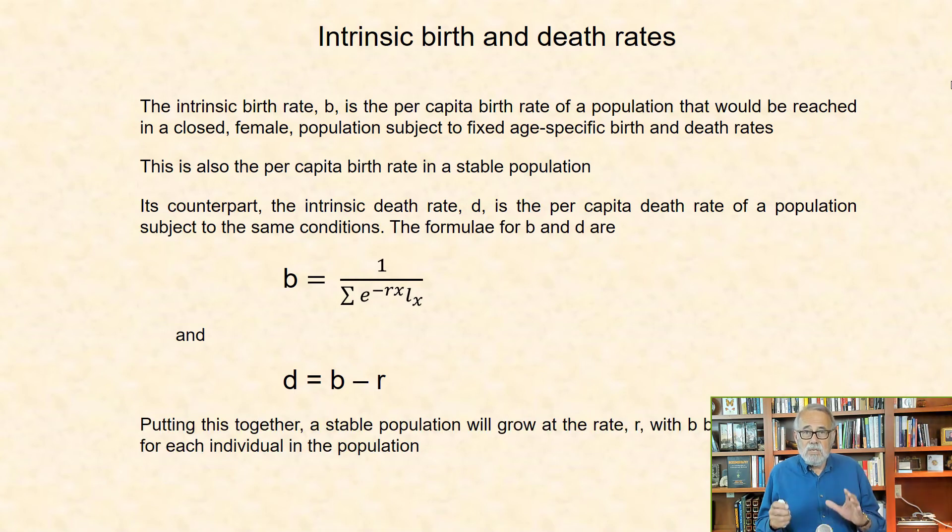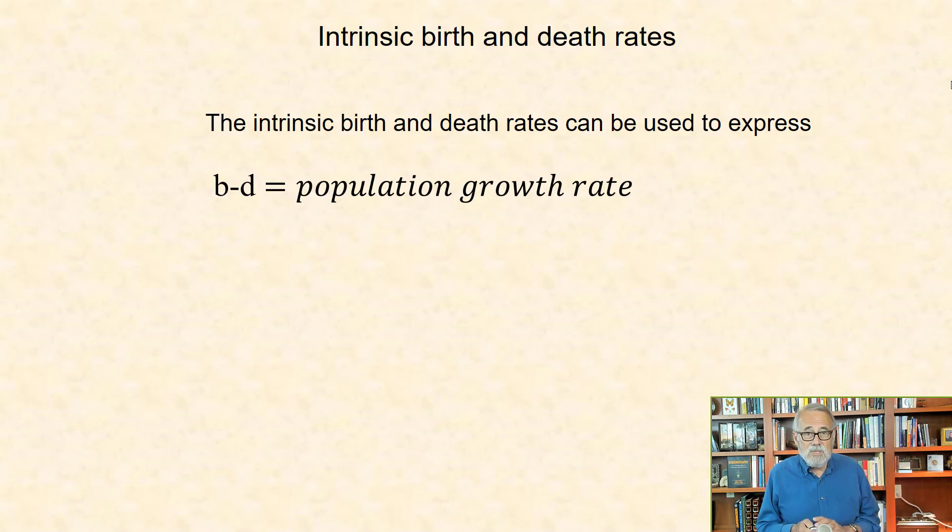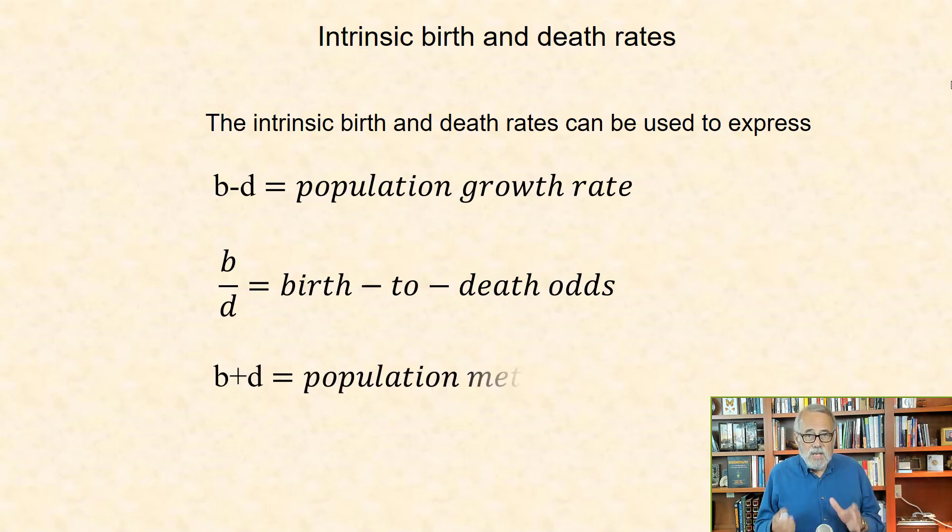Putting this together, a stable population will grow at the rate r, with b births and d deaths for each individual in the population. The intrinsic birth and death rates can be used to express the population growth rate, b minus d. The ratio of b to d, that is b over d, equals the birth to death odds. And the population metabolism is b plus d, that will provide a measure of overall vital rates.